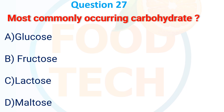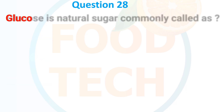Question 27: Most commonly occurring carbohydrate — A. Glucose, B. Fructose, C. Lactose, D. Maltose. The answer is A. Glucose.